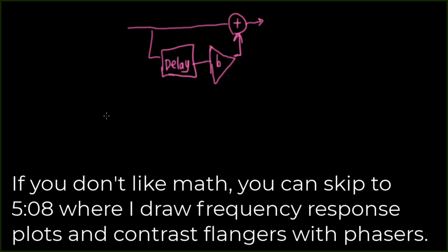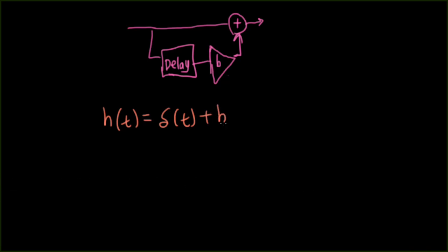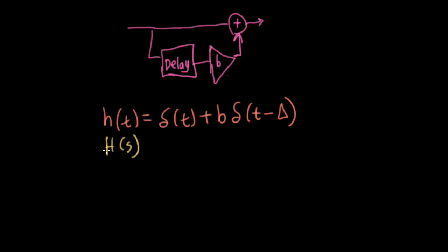Okay, so let's write down the impulse response for this system. We'll have delta T representing the signal that's coming straight through, and we'll add to that B times delta T minus whatever our delay is, and let's let delta be the delay amount. We could take the Laplace transform of this to get the system function capital H, equals 1 plus B, E to the minus S delta. And then if we want the frequency response, I could have just taken the Fourier transform of this directly, or we could take our Laplace transform and plug in J omega for S.